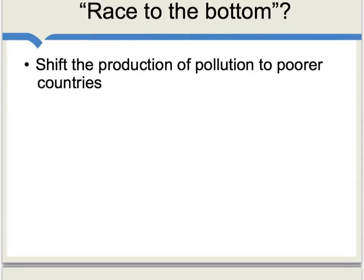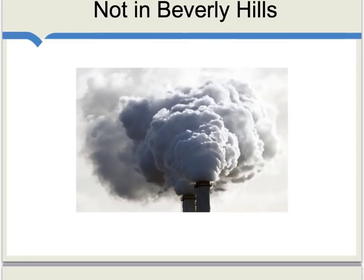The literature on trade and the environment also considers whether there is some kind of race to the bottom with regard to environmental standards. The evidence suggests that overall the world is investing more resources in protecting the environment, but we can see a notable trend where entrepreneurs are shifting the production of pollution and pollution-producing goods to poorer countries. You don't see a factory like this being located in Beverly Hills — the residents simply wouldn't put up with it.